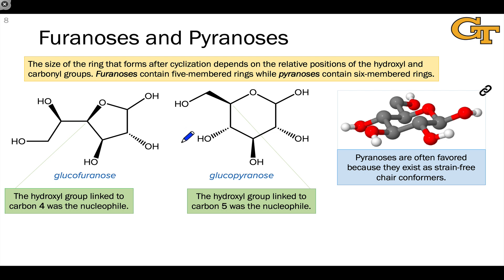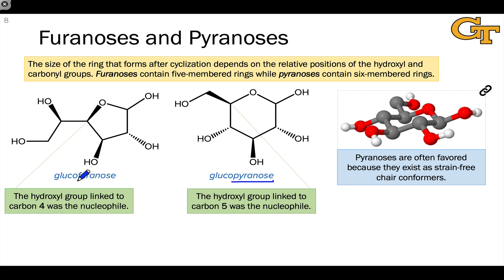We classify the cyclic forms of sugars based on the size of the ring. Using the hydroxyl linked to carbon-5 creates a six-membered ring, which is called a pyranose, because of its resemblance to pyran, which is a six-membered heterocycle containing oxygen. Cyclic monosaccharides containing five-membered rings are called furanoses because of their resemblance to furan, a five-membered ring heterocycle containing an oxygen atom.